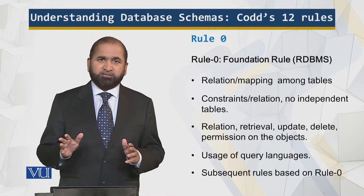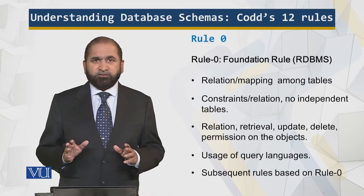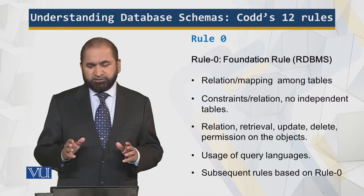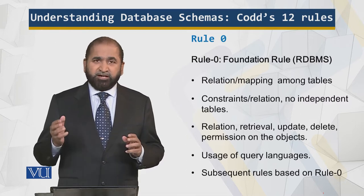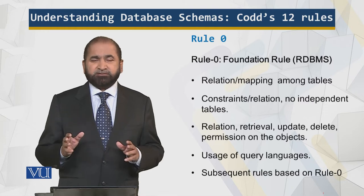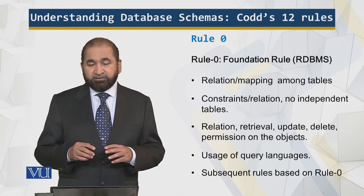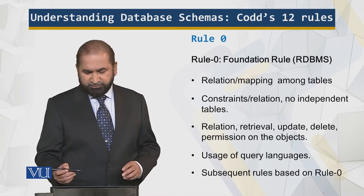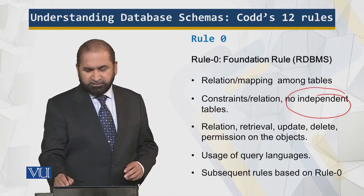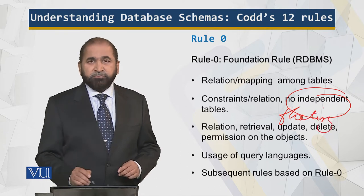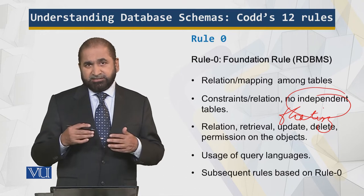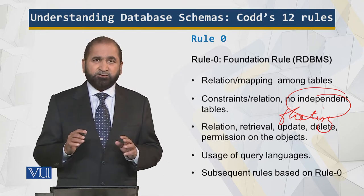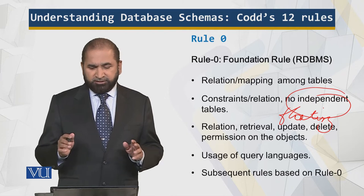This is a mandatory rule — it is understood, it is by default. What it is saying is that whatever is stored is stored in the tables. And whatever tables are there in the database, they are related. There are no independent tables — no floating tables. It means that every table is associated with, and related to, at least one other table.